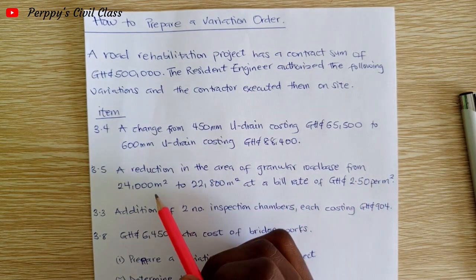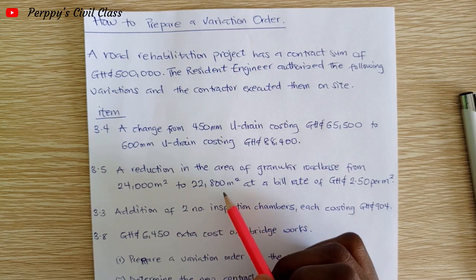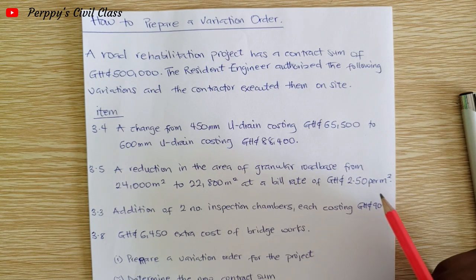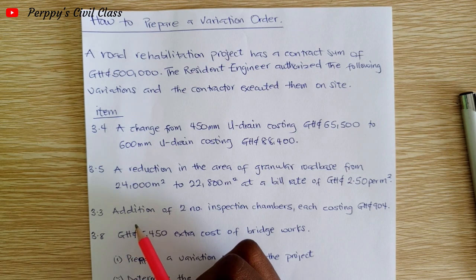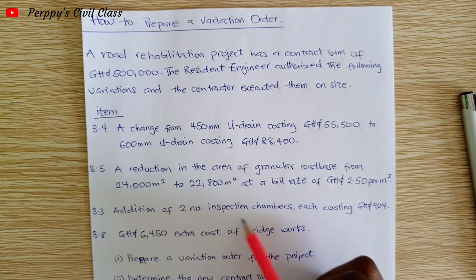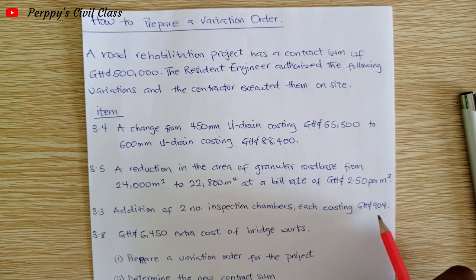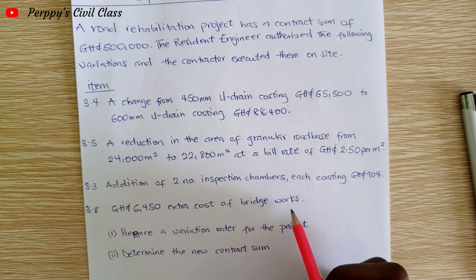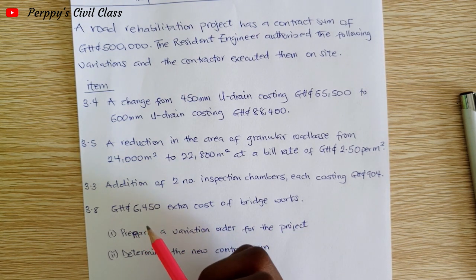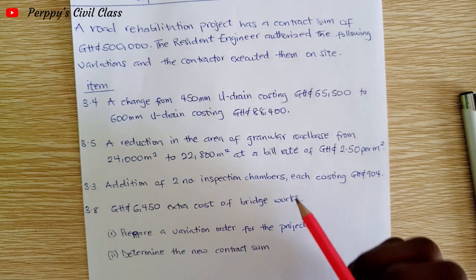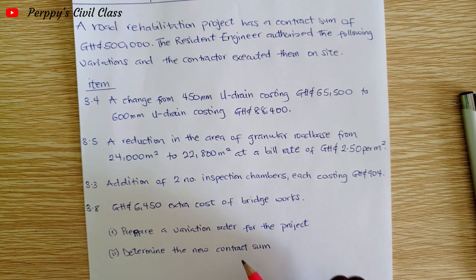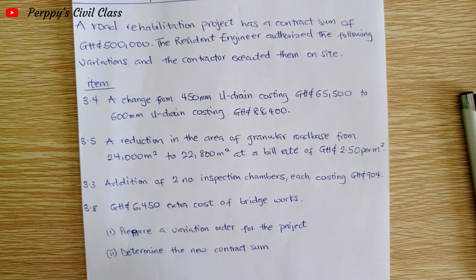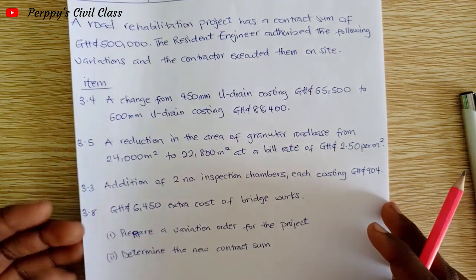Item 3.5: a reduction in the area of a granular road base from 24,000 square meters to 22,800 square meters at a bill rate of 2.50 per square meter. Item 3.3: addition of two number inspection chambers each costing 904 Ghana cedis. Item 3.8: extra cost of bridge works costing 6,450 Ghana cedis. We have to prepare a variation order and determine the new contract sum.